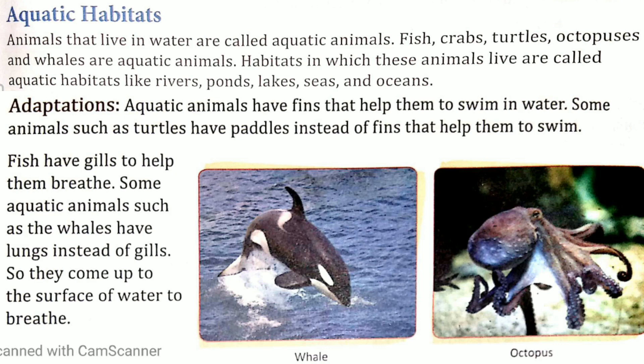Habitats in which these animals live are called aquatic habitats. Aisi jagah jahan par ye animals rehte hain, usse aquatic habitat bolte hain — jaleey vasisthan. Jaise ki river, ponds, lake, sea and ocean — nadiyan, talab, jheel, aur iske alawa samudra aur mahasagar — ye sab aquatic habitats bolaye jate hain. Okay students.